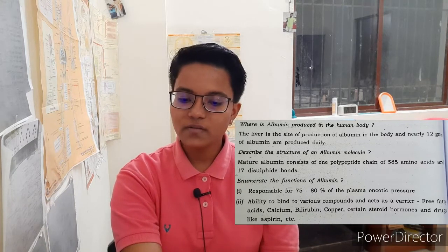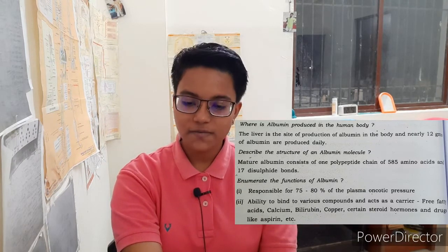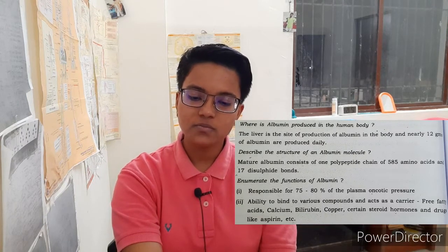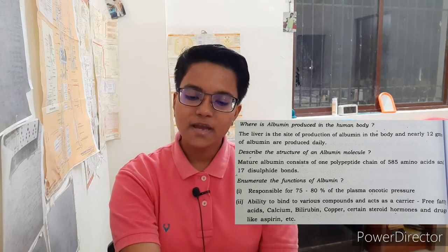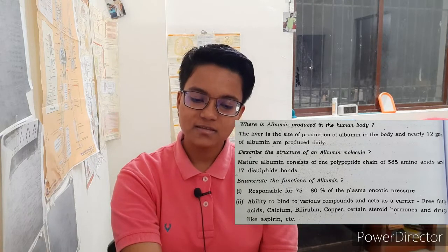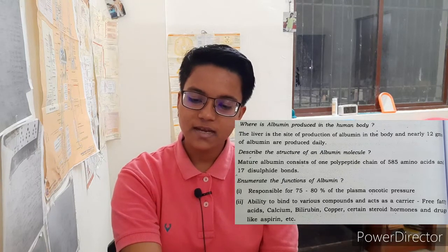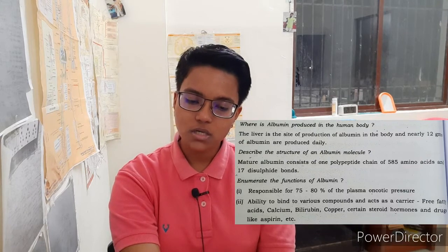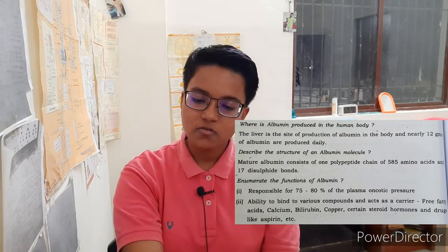Enumerate the functions of albumin. Albumin is responsible for 75–80% of the plasma oncotic pressure. It has the ability to bind to various compounds and act as a carrier for free fatty acids, calcium, bilirubin, copper, certain steroid hormones, and drugs like aspirin, etc.